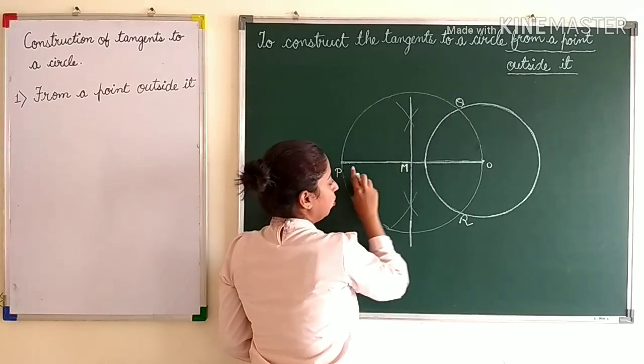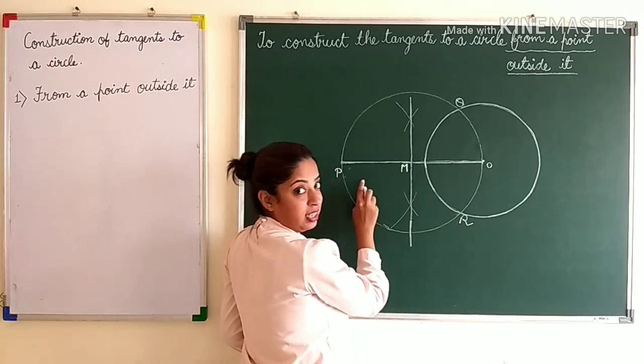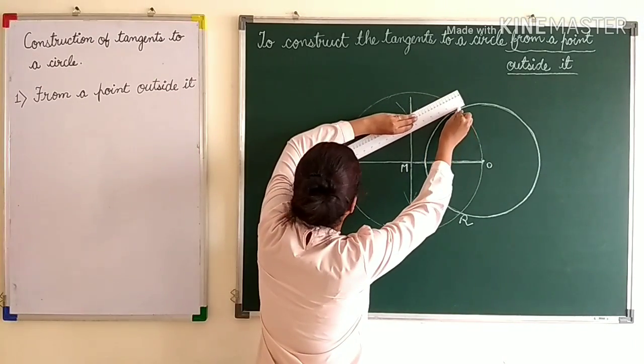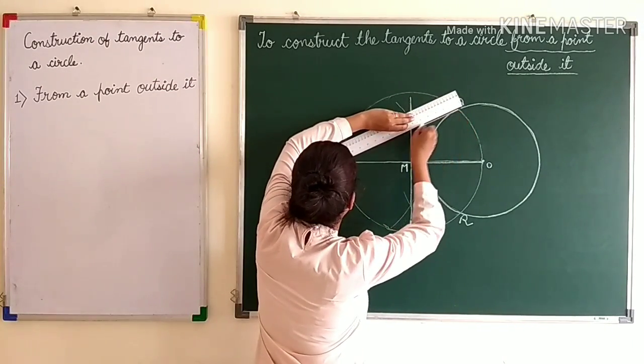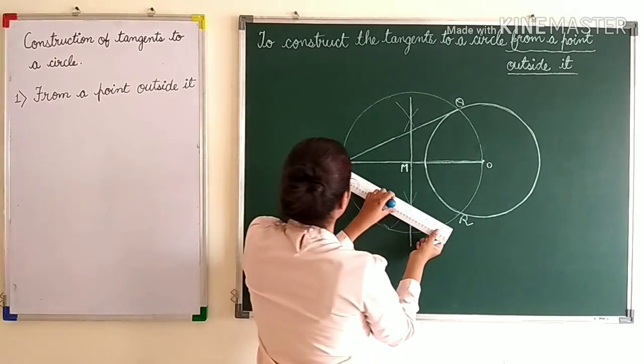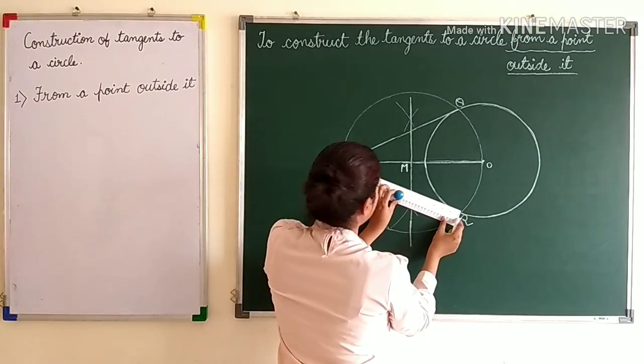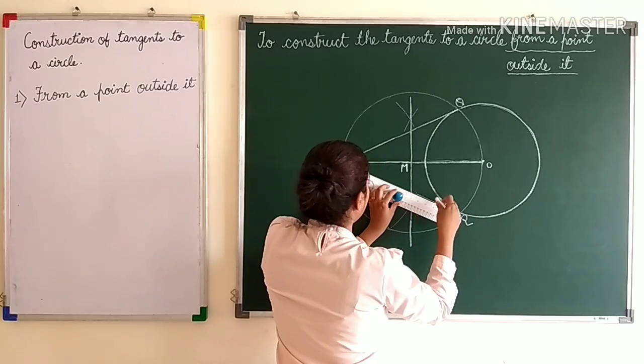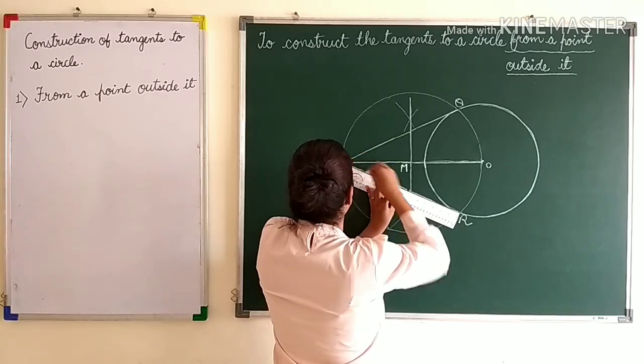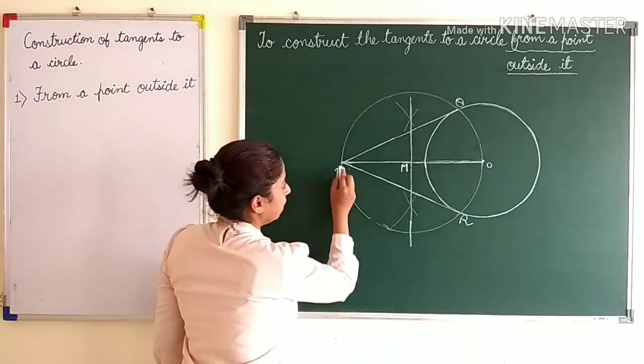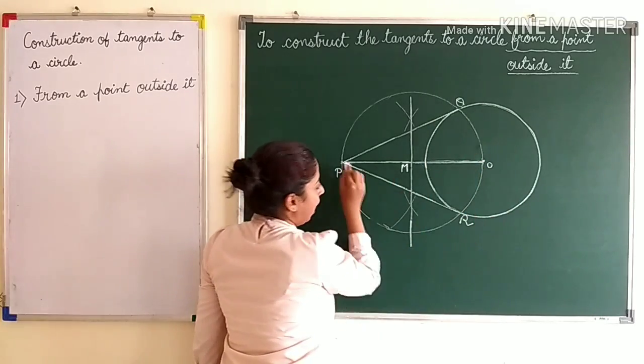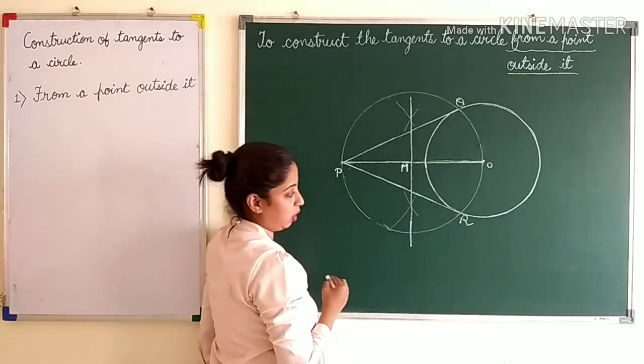Now we join PQ and PR, and these will be the required tangents. So our both tangents are ready. PQ is a tangent to this circle and PR is also a tangent to this circle.